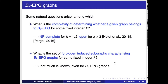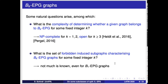Several questions are of interest for BK EPG graphs. In particular, the complexity of determining whether a given graph is in BK EPG. For B0 EPG, which is exactly the class of interval graphs, this is easy. But for K equals 1 and 2, it has been proven NP-complete in 2016. And for K at least 3, it's open.